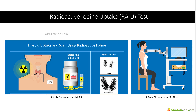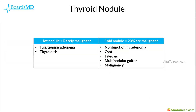Hot nodules like those seen in Graves' disease have a far lower likelihood of being malignant. We should generate a differential based on whether we see a hot or cold nodule on this radioactive iodine uptake test. Hot nodules are very rarely malignant and include functioning adenomas as well as thyroiditis. In contrast, 20% of cold nodules are going to be malignant. Therefore, cold nodules often require further workup, oftentimes with a fine needle aspiration or FNA.